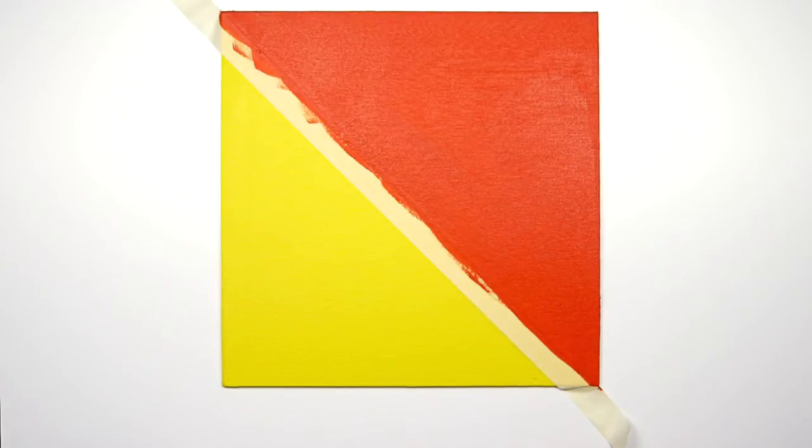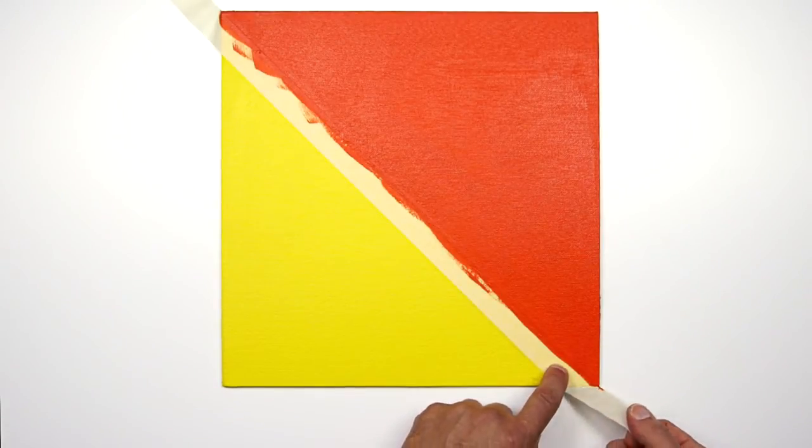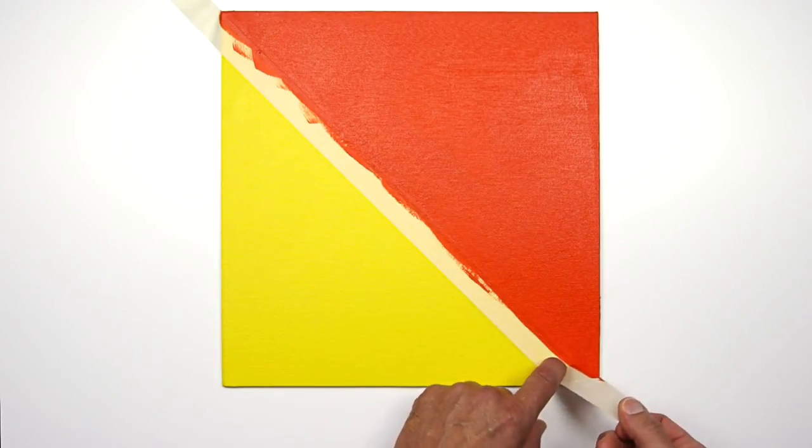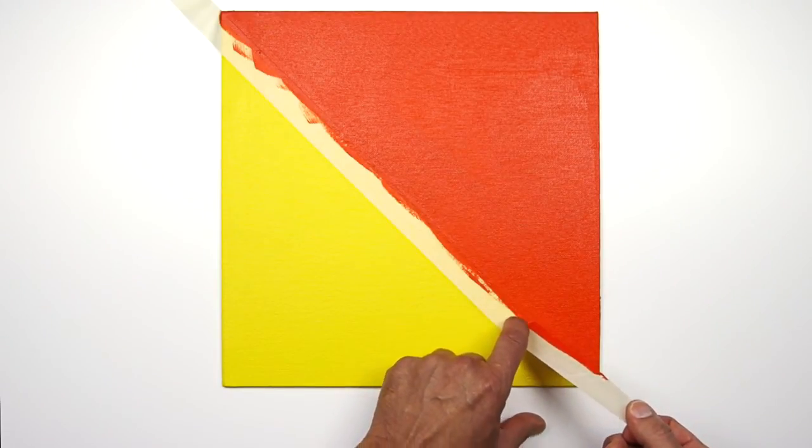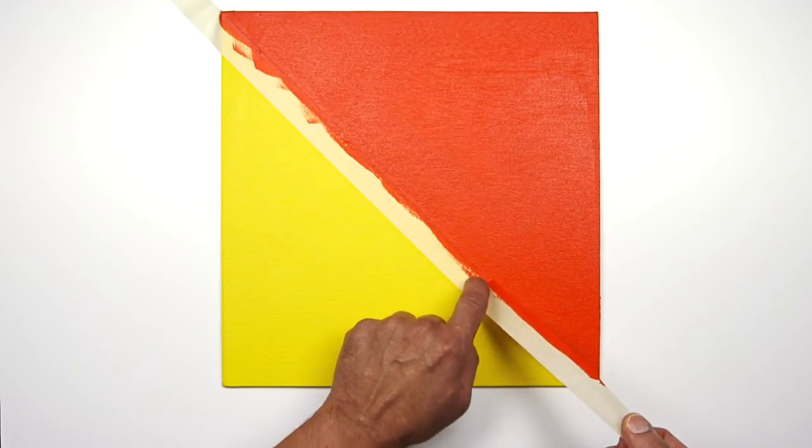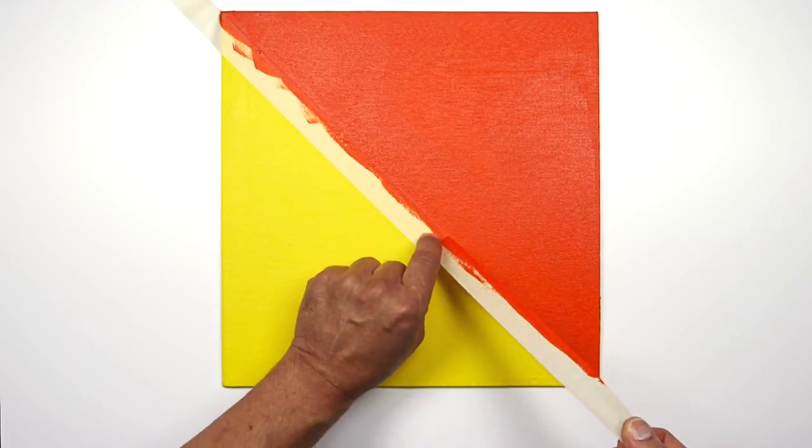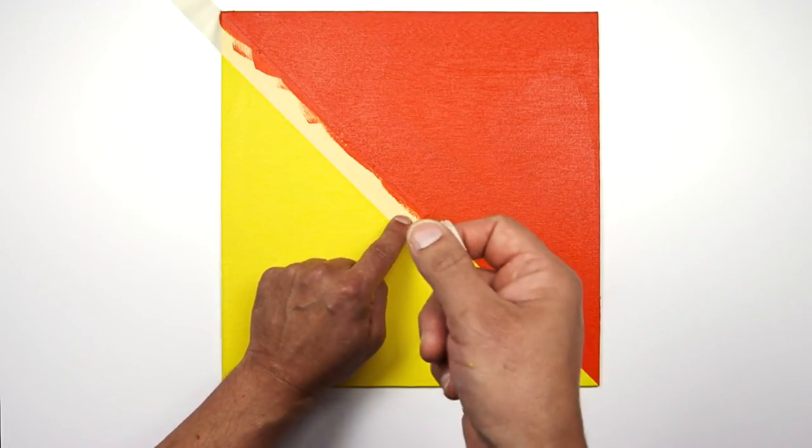Now that the paint has thoroughly dried—not just touch dry but completely dried—I'm going to remove the tape carefully. What sometimes helps is to do this at a very acute angle rather than pulling upwards.